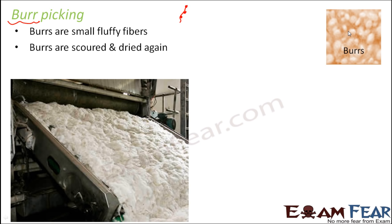Burrs are removed by scouring and drying again. Wherever you see burrs, you repeat the process of scouring — that is, washing the wool again. You stretch out the bubble-like structures and then dry them again. This process helps in reducing the number of burrs, making burr picking a very important part of wool processing.